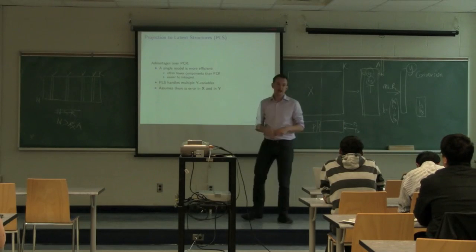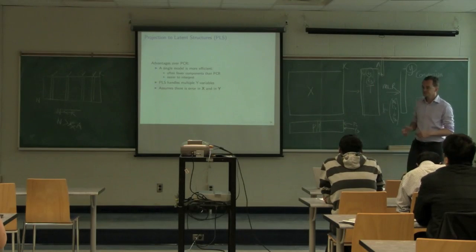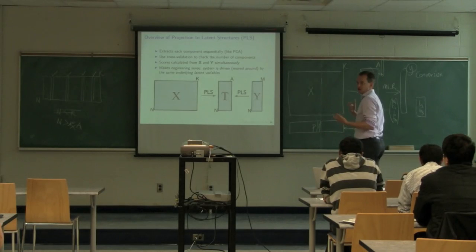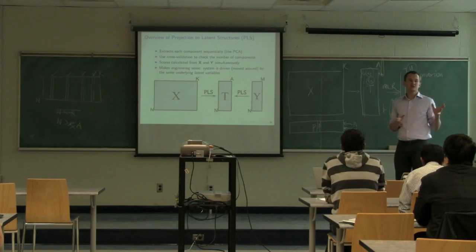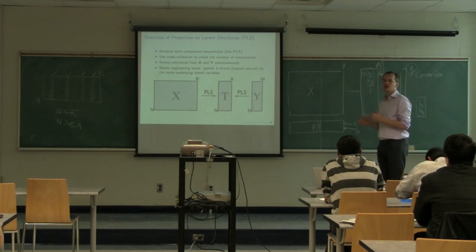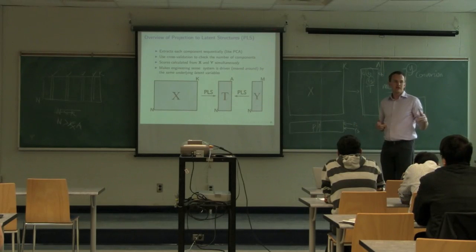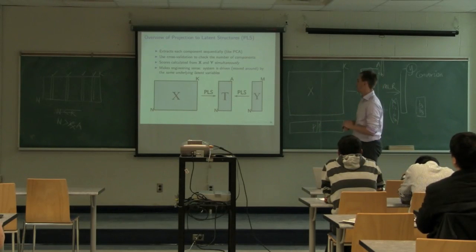If we can do that, we'll have real advantages. We'll be able to build a model on the Y space using multiple columns in Y. We'll use fewer components because those T's will be directly related to X and Y simultaneously. And it should be easier to interpret — we won't have the messy back-and-forth of PCR. Today's class introduces these new concepts; we'll fill in the details in future classes, which will be mostly applications of PCA and PLS.